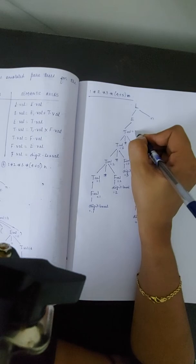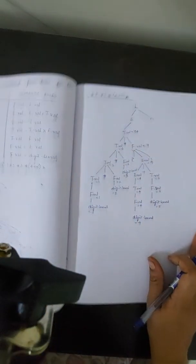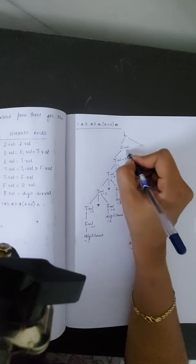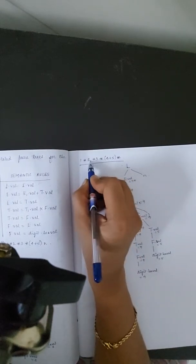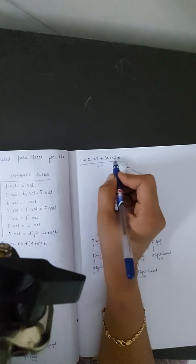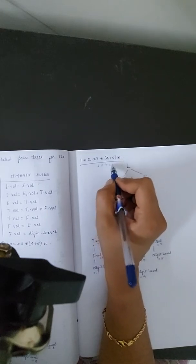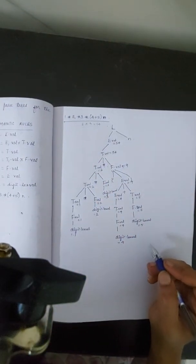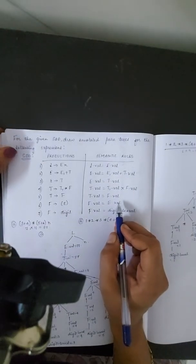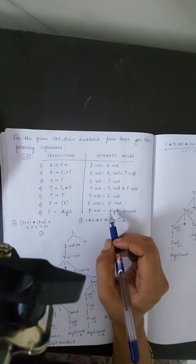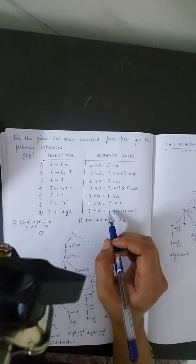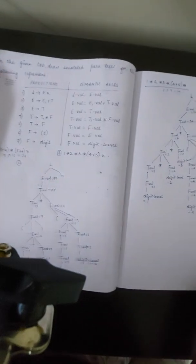E dot val equals 4 plus T, where digit value is 5. T dot val equals 5, and E dot val equals 4 plus 5 which is 9. That is sent to F dot val equals 9. Now T dot val equals 6 into 9, and 6 nines are 54. E dot val equals 54. Let us verify: 1 into 2 is 2, 2 into 3 is 6, 4 plus 5 is 9, 6 into 9 equals 54. This is the way of drawing an annotated parse tree for the given S-attributed SDD. Since it has only synthesized attributes and no inherited attributes, it is easy to draw. Thanks for watching.